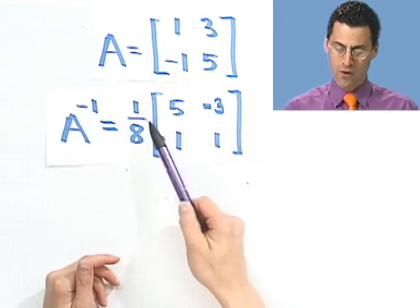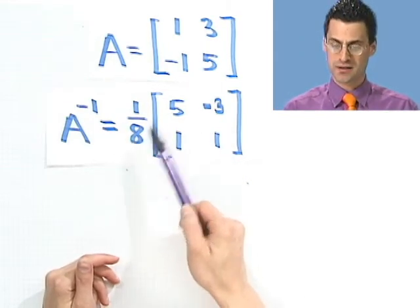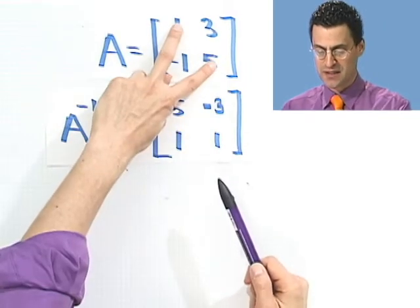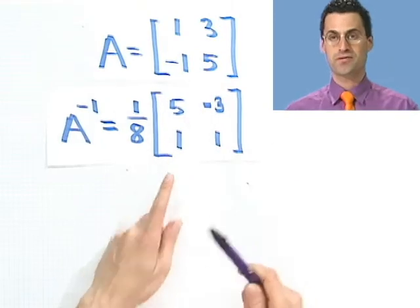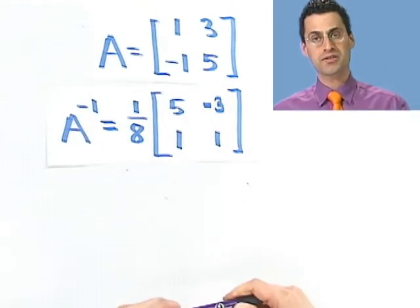The recipe is you take 1 over the determinant of this matrix, and then you take these two people and flip them, and then these two people you keep intact, but you just put negative signs in front of them. Now, what I want to do is to start to inspire a way of thinking about this procedure. It's a little bit different than what I just showed you, even though what I just showed you is perfectly fine.